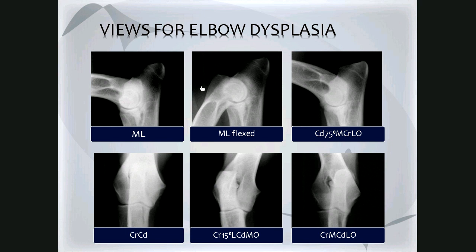The medial lateral flexed view is used for the elbow dysplasia grading scheme. The flexion allows visualization of the anconeal process to look for pathology there and also to look for osteophyte formation in that area, which would indicate degenerative joint disease.